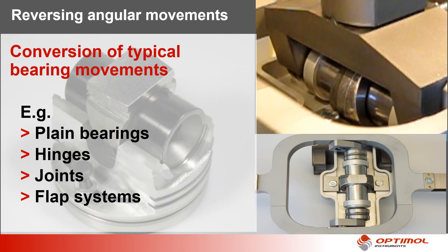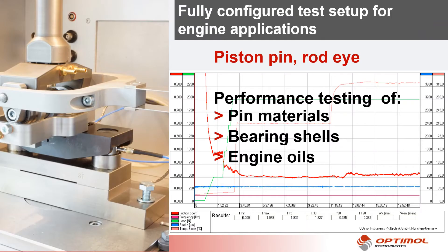A very well known example of such movements is the piston-pin rod eye contact. Here the SRV allows you to simultaneously test pin materials, bearing materials and engine oils in one test setup.